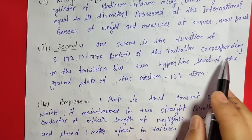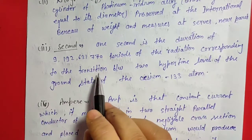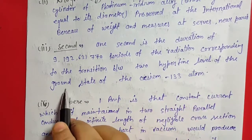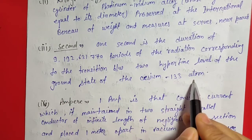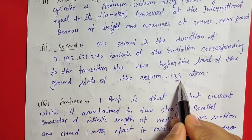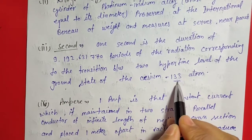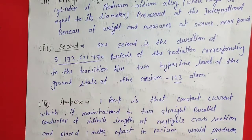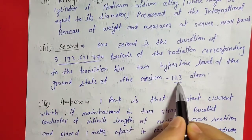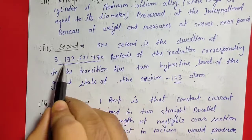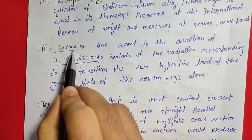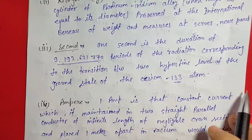One second is the duration of 9,192,631,770 periods of radiation corresponding to the transition between the hyperfine levels of the ground state of the Cesium-133 atom. That means the time period in which the Cesium-133 atom emits that amount of radiation is defined as one second.